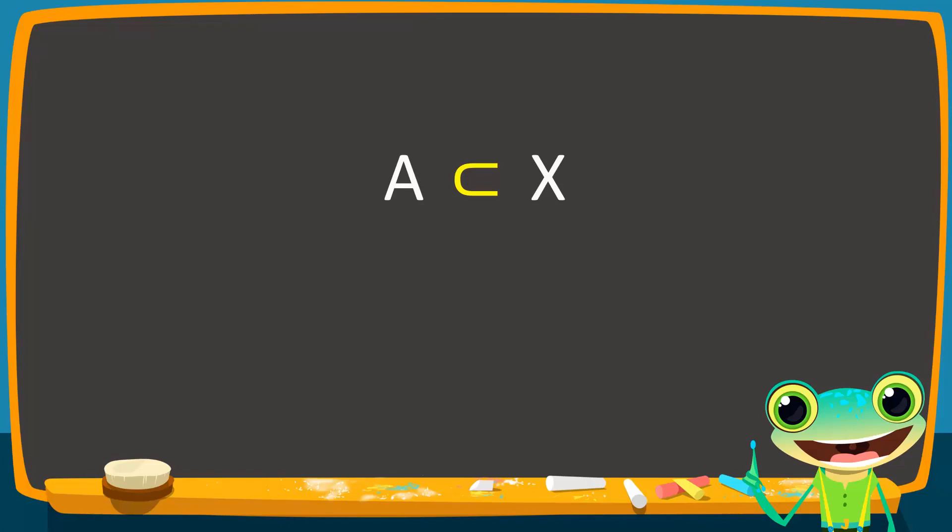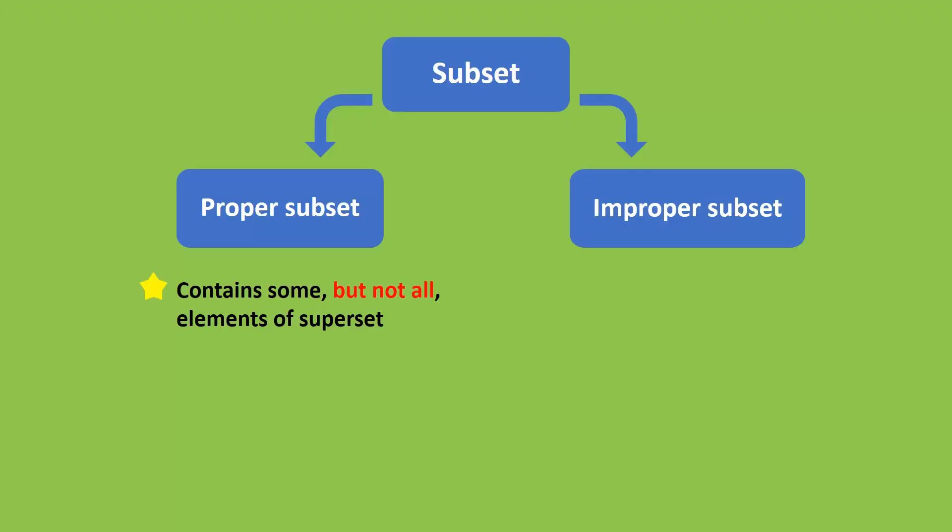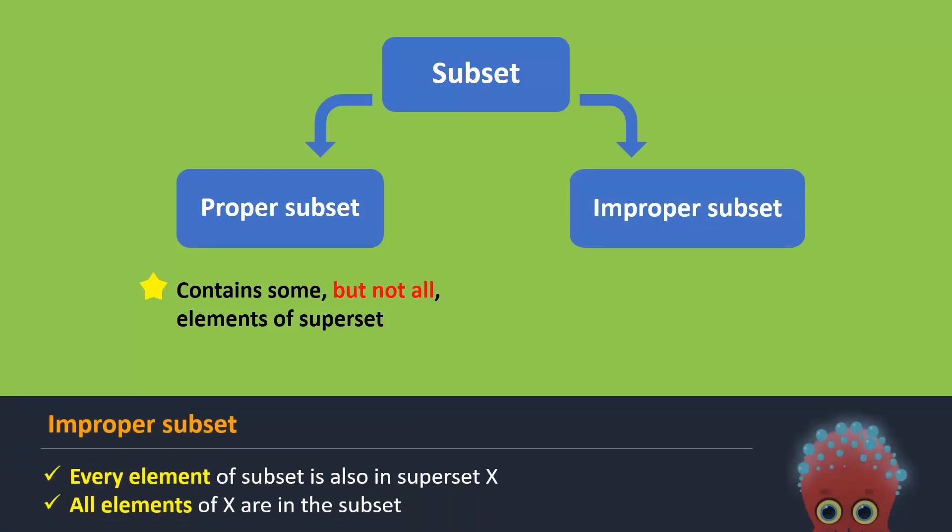What if the subset contains all the elements of the superset? You guessed it! We then have the improper subset. If every element of a subset is also in superset X and all elements of X are in the subset, then the subset is an improper subset of X.